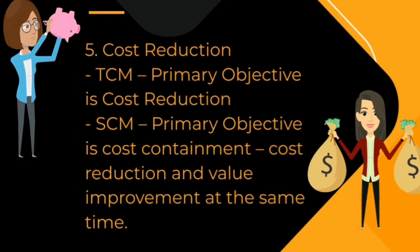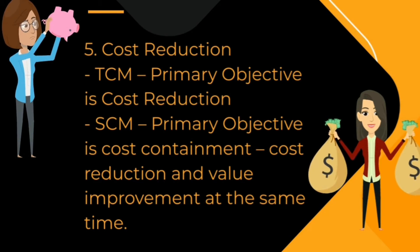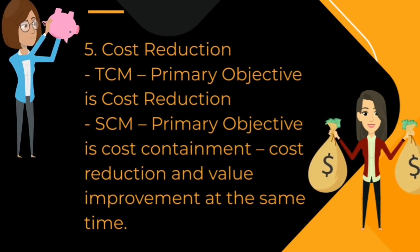Cost reduction is the primary objective of traditional cost management, while in strategic cost management the primary objective is cost containment along with cost reduction and value improvement. Cost reduction means finding a lower cost alternative instead of eliminating any activity, while cost containment means maintaining expense levels to prevent unnecessary spending or thoughtfully reducing expenses to improve profitability without affecting long-term growth. This concept is broader and more helpful in today's environment.